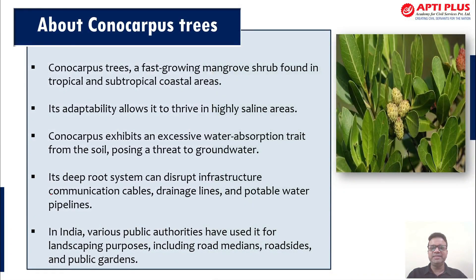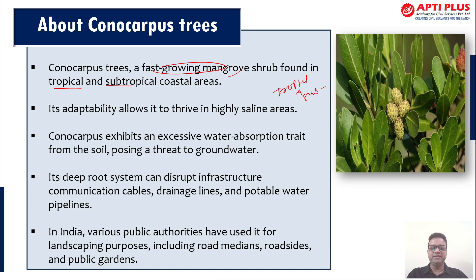Now coming to other details about the konocarpus tree — some basics that you need to know, such as how it grows and what its functions and capabilities are. This is actually a fast-growing mangrove shrub which is found in tropical and subtropical coastal areas.